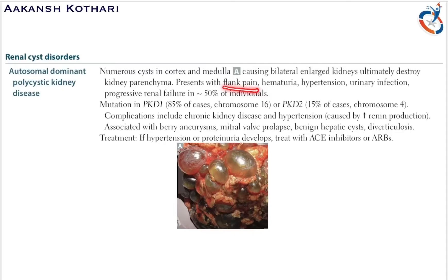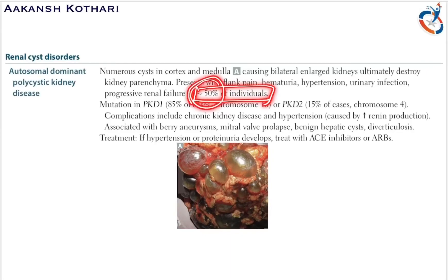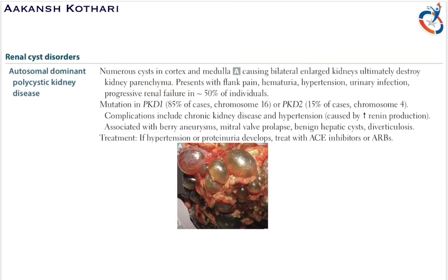The presentation of autosomal dominant polycystic kidney disease includes flank pain, hematuria (RBC casts in the urine), hypertension — which is a very important aspect — and urinary infection. 50 percent of individuals progress to renal failure.